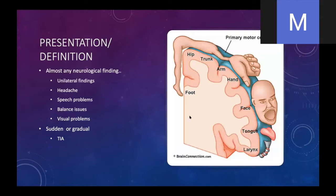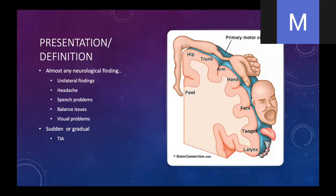Patients that present with strokes can present in a variety of different ways. The homunculus tells you the different areas of the brain being affected. The anterior circulation does most of the lower leg, and the middle cerebral circulation does the vast majority of everything else, other than posture and coordination which is your posterior circulation. The vast majority of strokes — about 80 to 85% — involve the middle cerebral circulation. They can present with visual problems, headaches, or balance issues, so making the diagnosis can be very difficult.